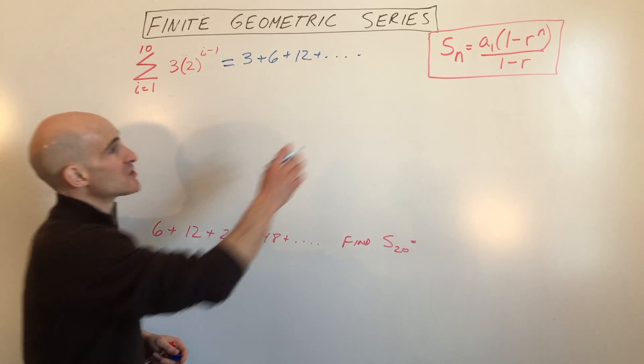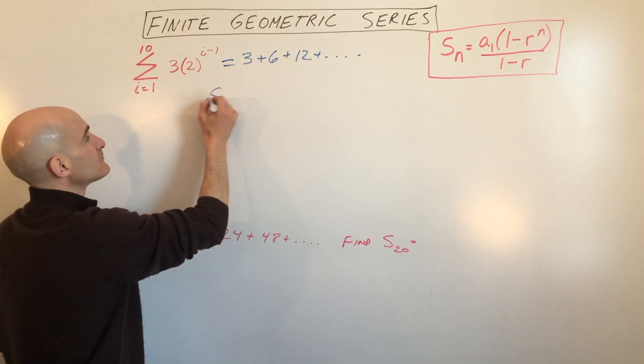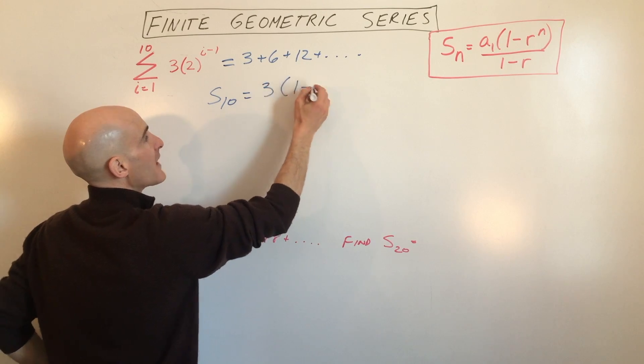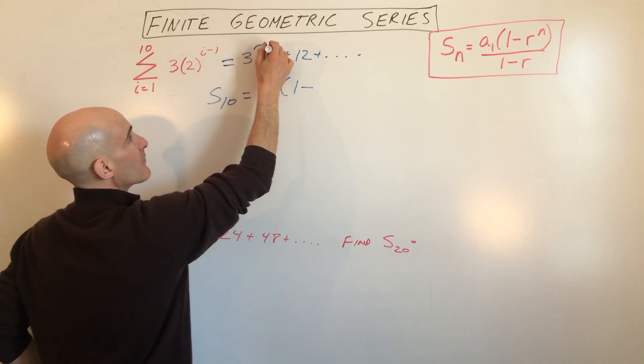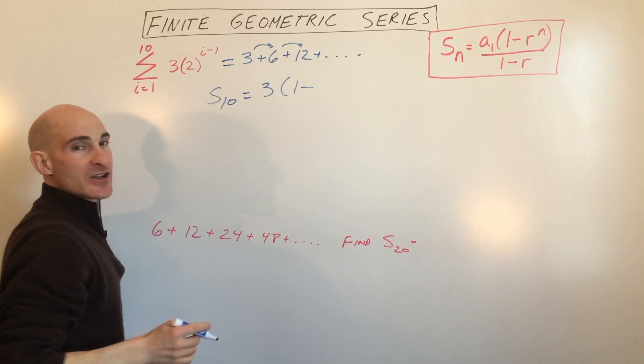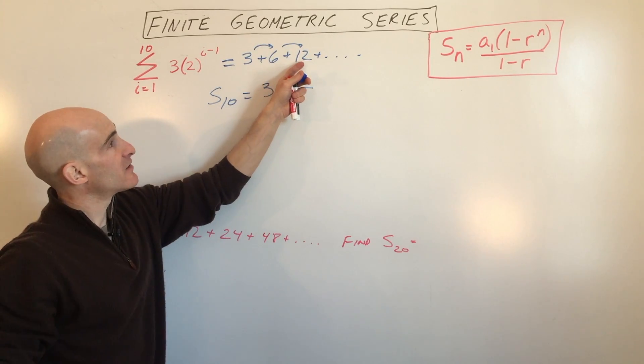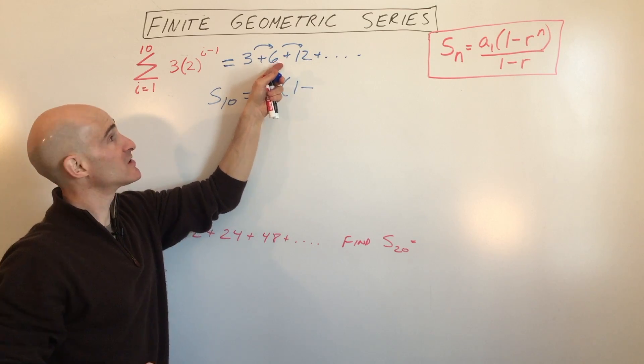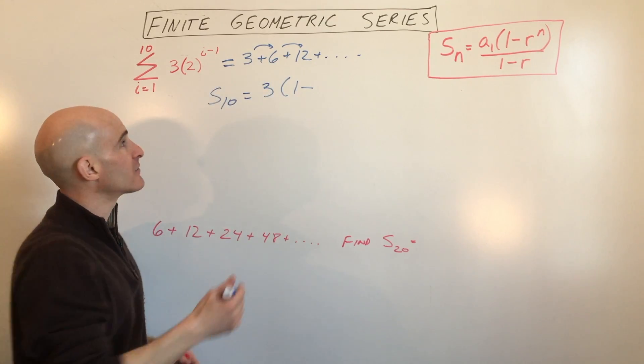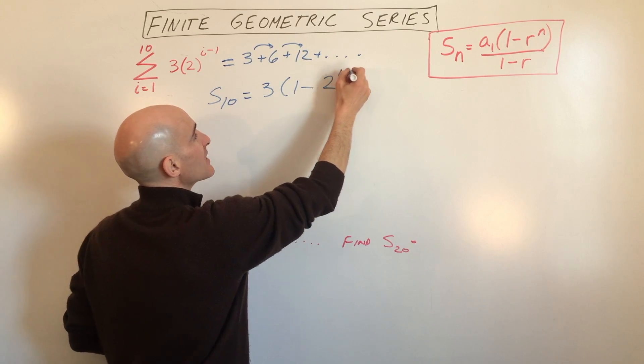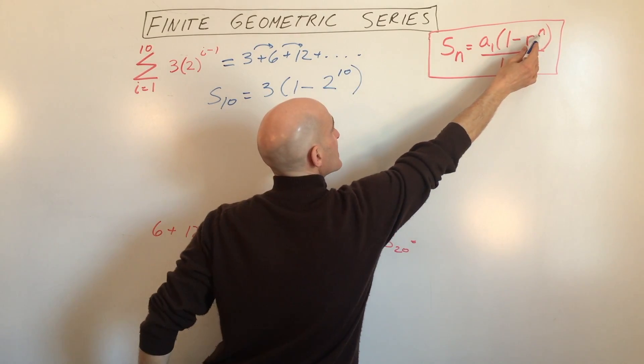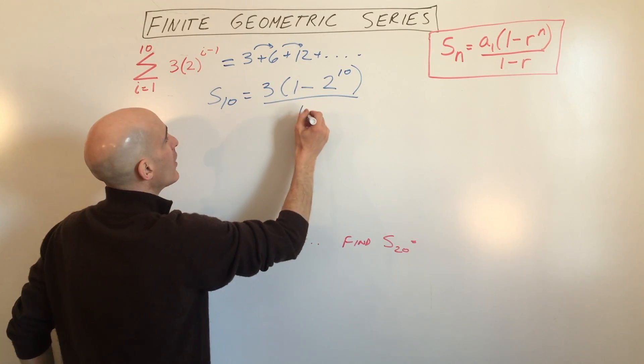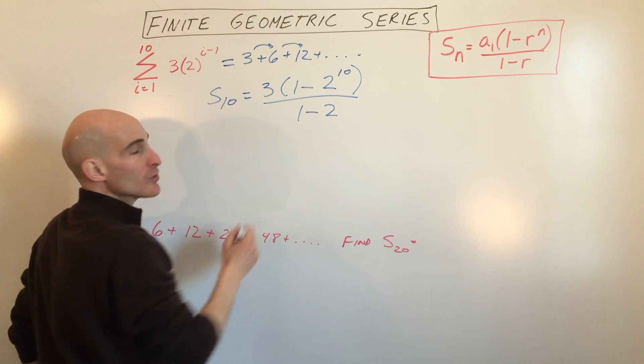But what we want to do is find the sum of the first 10 terms. So we're going to use our formula. We've got S sub 10 equals the first term, A sub 1, which is 3, times 1 minus the ratio, which is what we're multiplying by to get to the next term. If you're not sure how to find the ratio, just take the term and divide it by the one before it. So 12 divided by 6 is 2, 6 divided by 3 is 2. That's how you can find the ratio. So that's going to be 2 to the 10th power, because we're finding the sum of the first 10 terms. These ends are the same. All divided by 1 minus the ratio, which is 2.